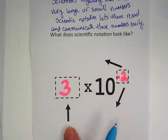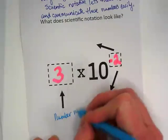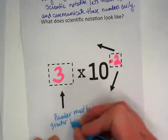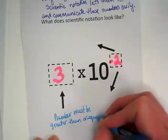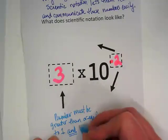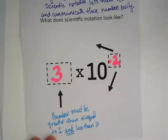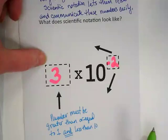So the number that's in the place of the a, this number, must be greater than or equal to 1. And it also must be less than 10. So the number that's in the a position has to be greater than or equal to 1 and less than 10.